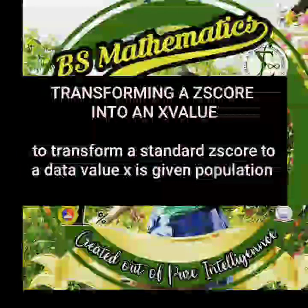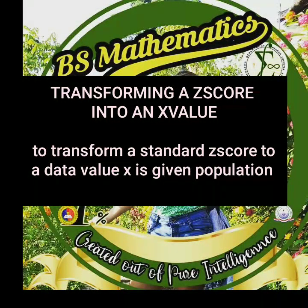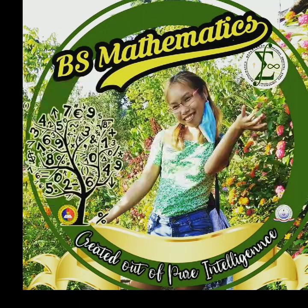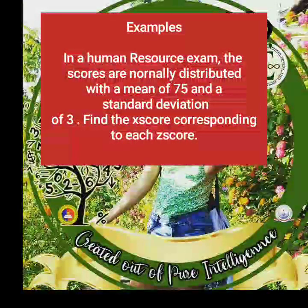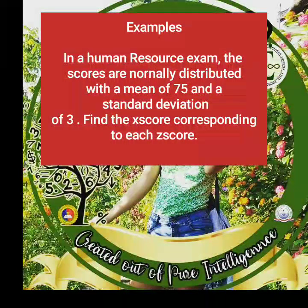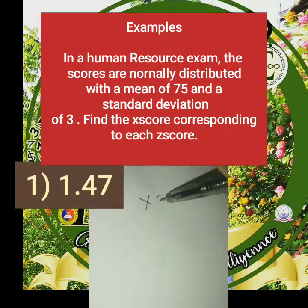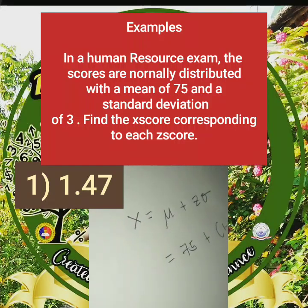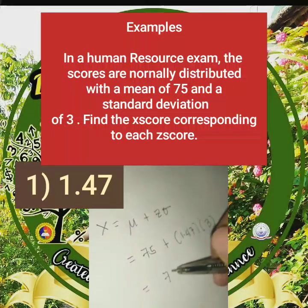Transforming a z-score to an x-value. To transform a standard z-score to a data value x in a given population, use the formula x = mean + z × standard deviation. Example: in a human resource exam, scores are normally distributed with a mean of 75 and a standard deviation of 3. For z = 1.47, x = 75 + 1.47 × 3 = 79.41.